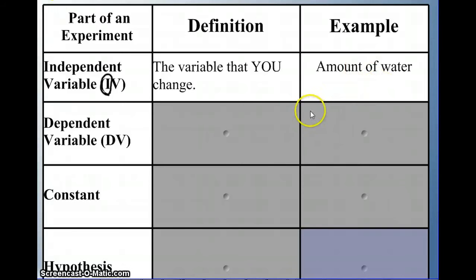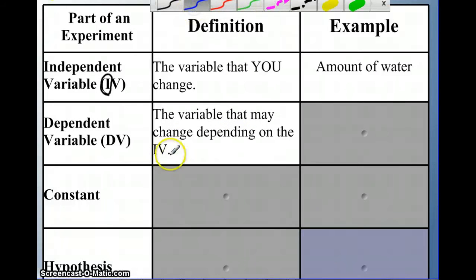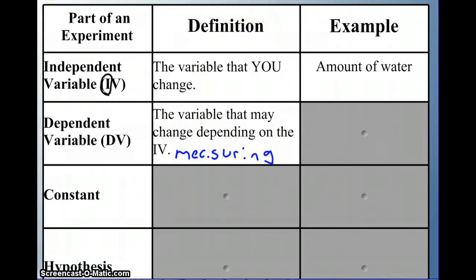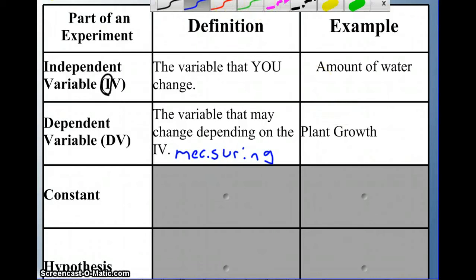The dependent variable is the variable that may change depending on the independent variable. I would also add that it is the variable that you are measuring. Anytime you're measuring something, that is often the dependent variable. An example in our question: the dependent variable is the plant growth in centimeters — you need to include 'in centimeters.'